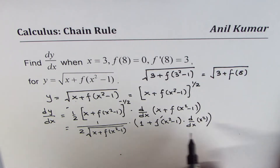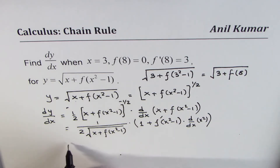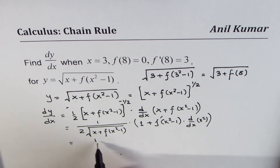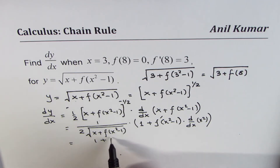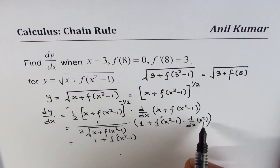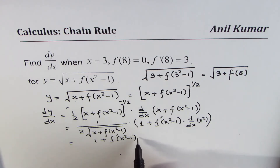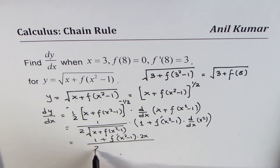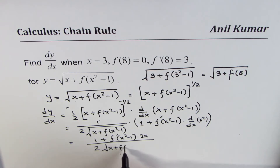That is how the chain rule works — you have to move inside. So we get 1 plus f′(x² − 1) times 2x, all divided by 2 times the square root of x plus f(x² − 1).